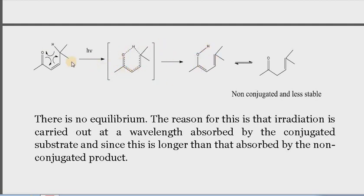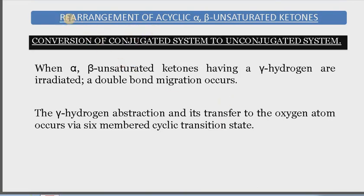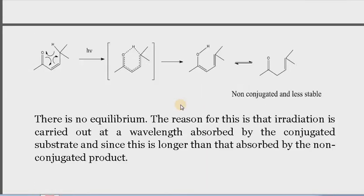This hydrogen from the gamma position shifts to the oxygen, and the double bond shifts between the beta and gamma carbons. The starting material is a conjugated system, and the product is a non-conjugated system — there are two sigma bonds between the two double bonds — so a less stable, non-conjugated system is formed during this rearrangement of acyclic alpha-beta unsaturated ketones.